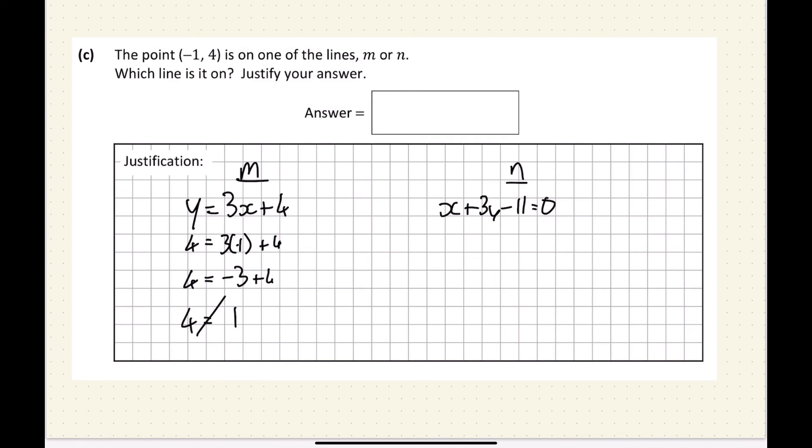We sub our values in. Then we get minus 1 plus 3 times 4 minus 11 equals 0. Minus 1 plus 12... oh sorry, minus 11 equals 0. Minus 1 plus 12 is 11, minus 11 equals 0. 0 equals 0. Yep, it is on the line n. And there's my justification there.